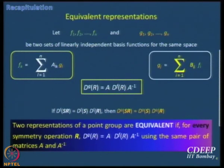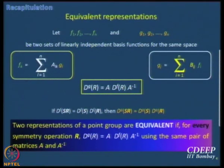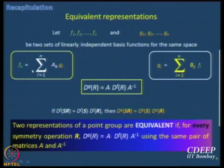We have learned what equivalent representations are and how to switch basis using a similarity transformation. What we did previously is work with two different linearly independent basis functions — not necessarily orthonormal, just linearly independent. We worked with two sets: the F's and the G's. The F's and G's are related by a system of linear equations: F_k equals the sum over L from 1 to N of A_LK times G_L.